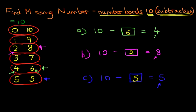So therefore, the set of numbers on the left come in handy both for addition and subtraction. Once you know how to write those, you'll be able to do number bonds to 10 very easily. So that is how we find the missing number for number bonds to 10 with subtraction questions. Thank you.